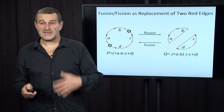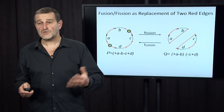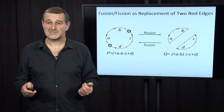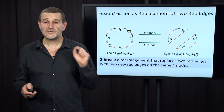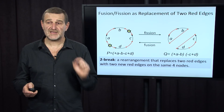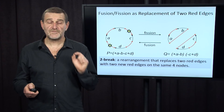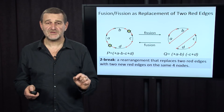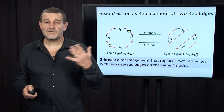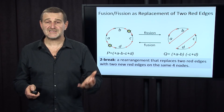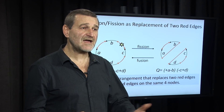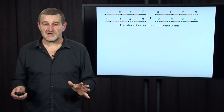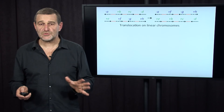Similarly, in the case of fusion — the reverse operation — we also remove two red edges and add two new red edges. We therefore define the notion of a two-break: a rearrangement that replaces two red edges with two new red edges on the same four nodes. What we have accomplished is replacing four different operations — reversals, translocations, fusions, and fissions — with a single operation: a two-break.